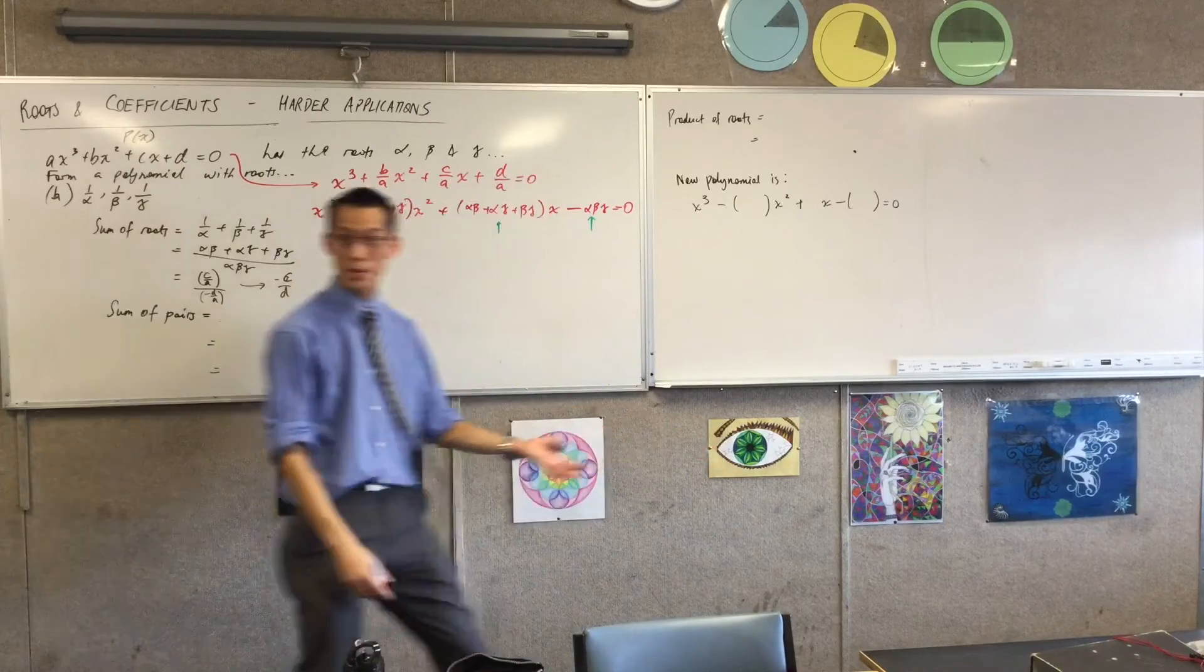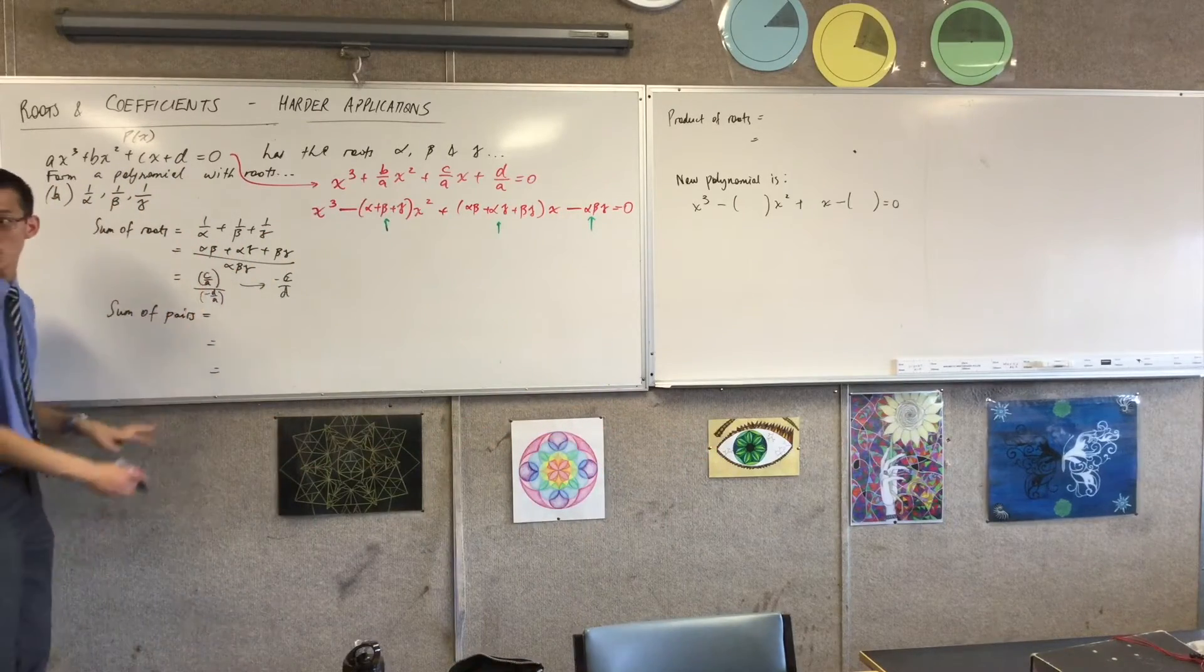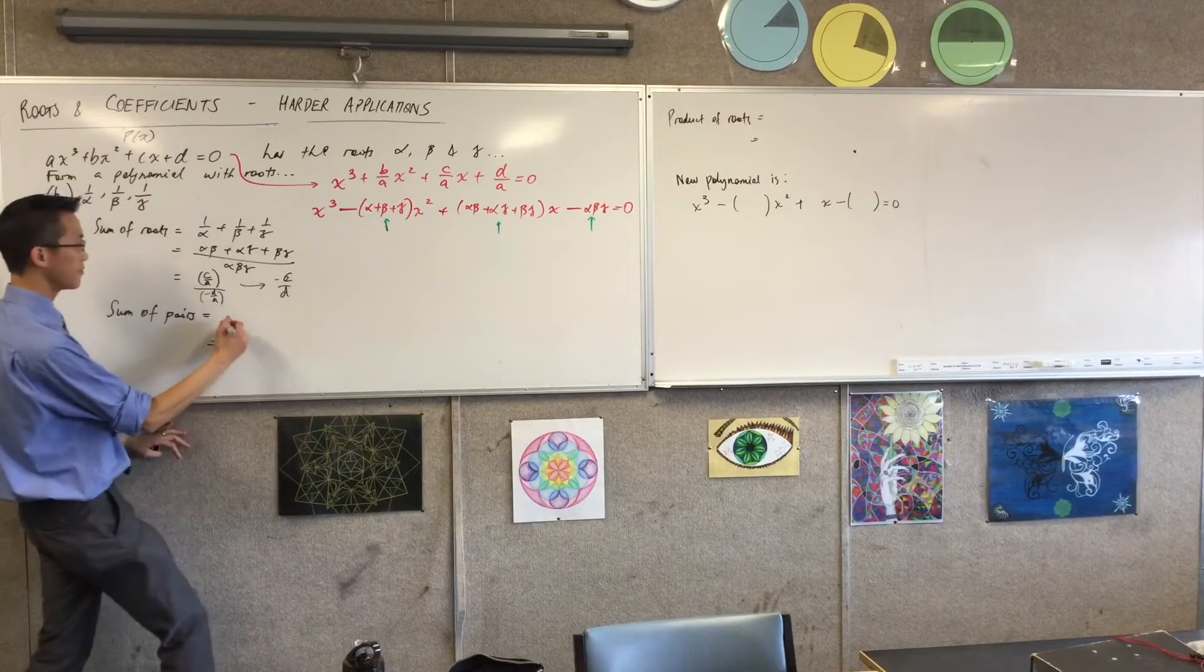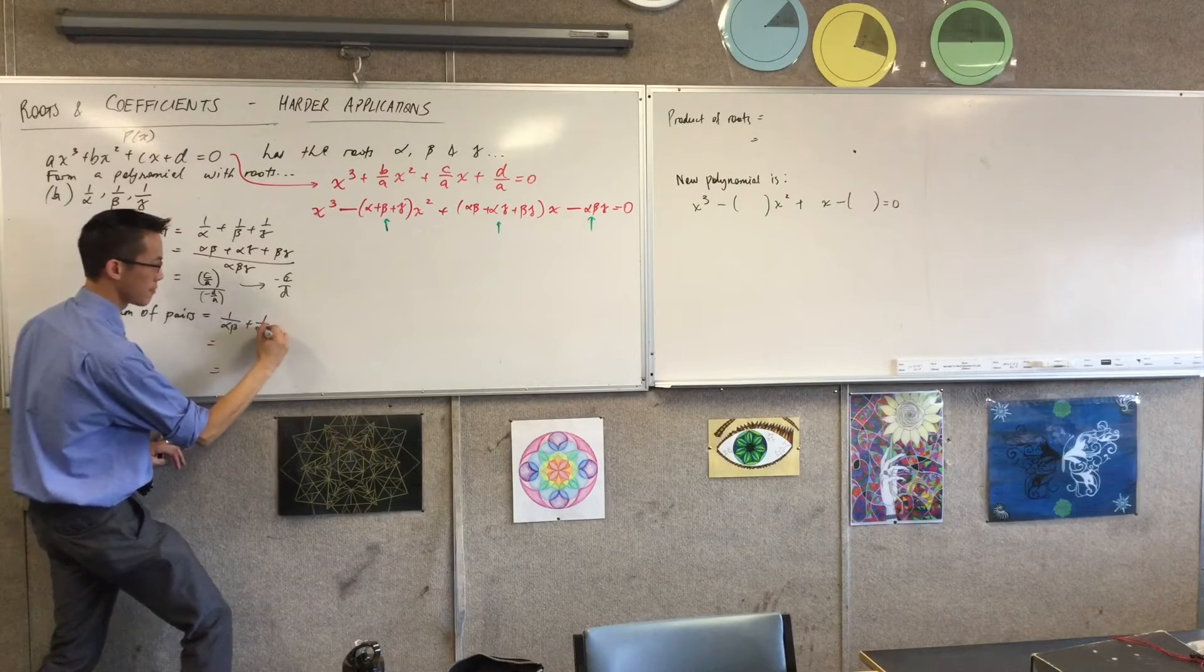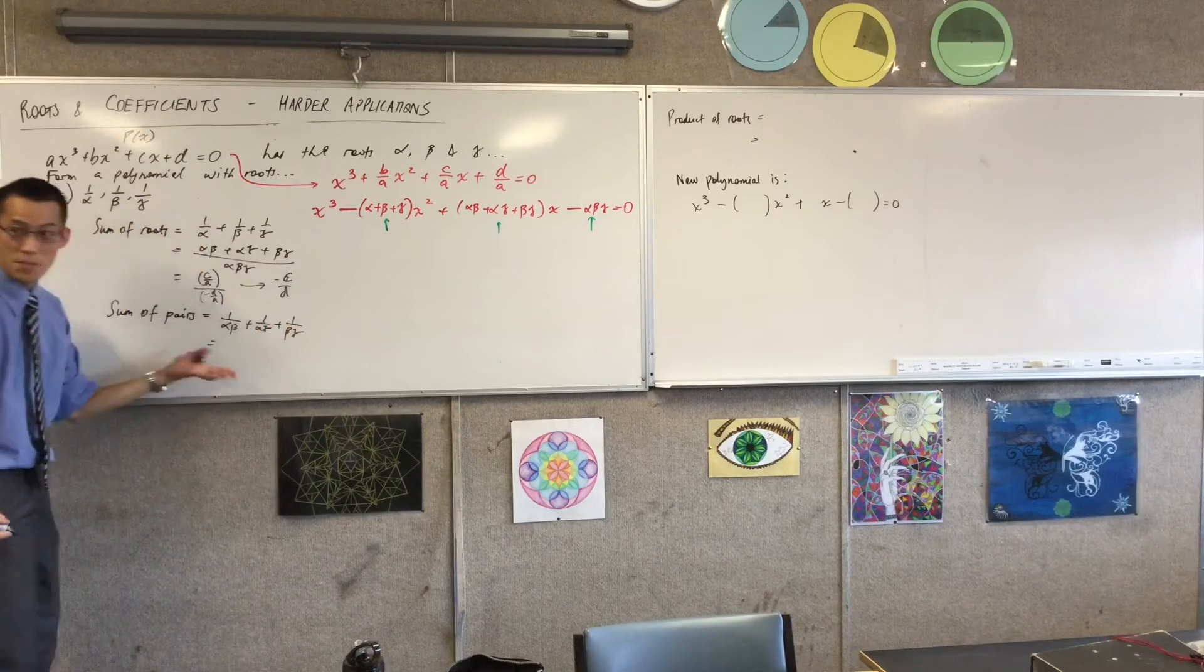Sum of pairs, what happens when you add them all together? You end up with a very similar fraction, don't you? What do you get? This is where you begin. When you put them together, it's almost identical to this.